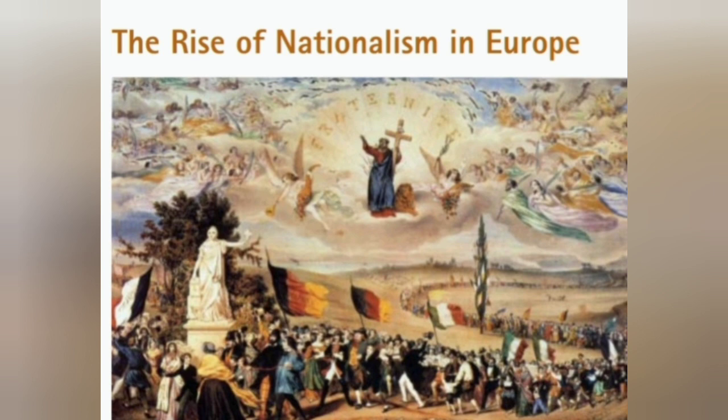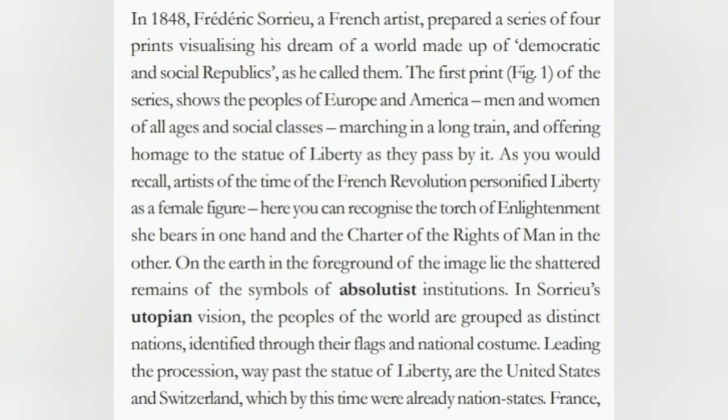Class 10th History, Chapter 1: The Rise of Nationalism in Europe. In 1848, Frédéric Sorrieu, a French artist, prepared a series of four prints visualizing his dream of a world made up of democratic and social republics, as he called them. The first print, Figure 1, shows the peoples of Europe and America — men and women of all ages and social classes.